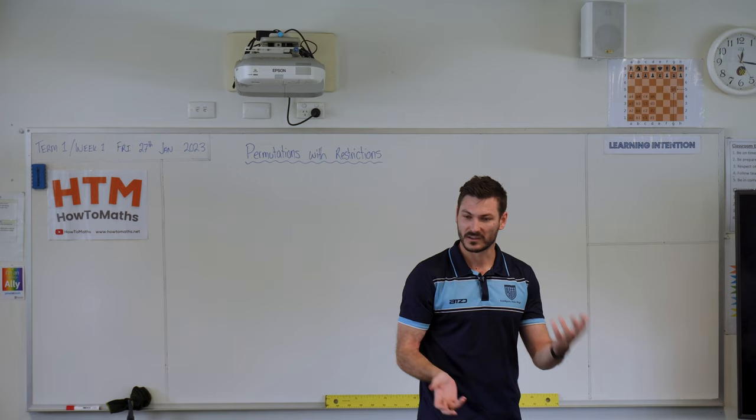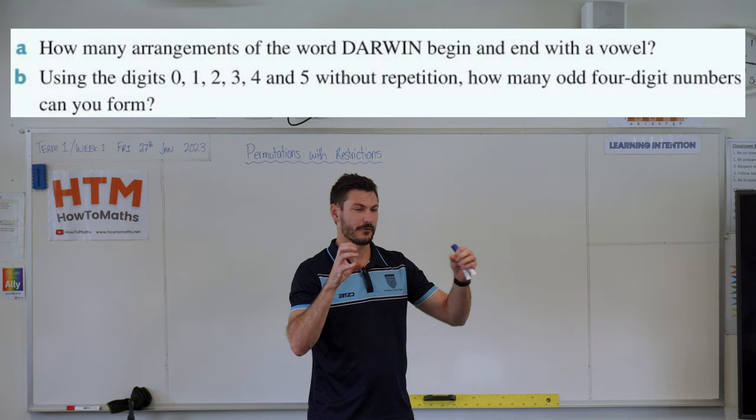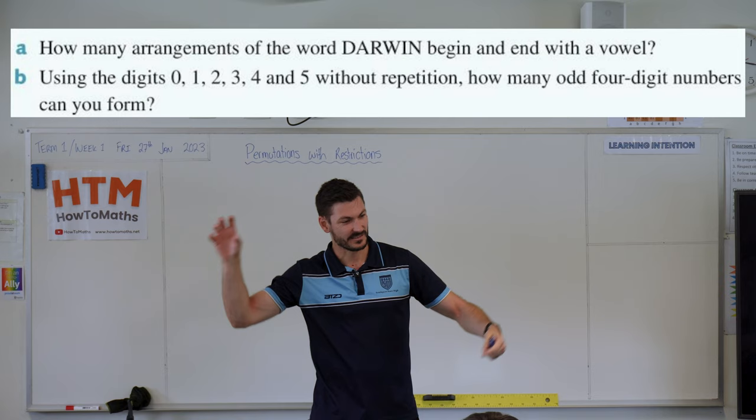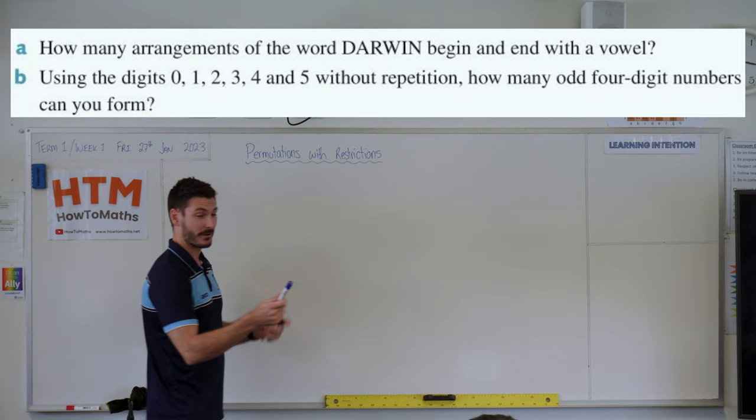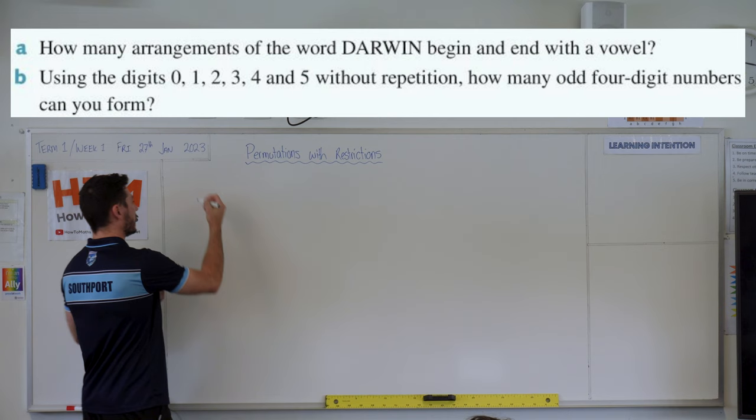So first of all, we've got the question: how many arrangements of the word DARWIN begin and end with a vowel? So if you've got this or you've got a situation where you're arranging students on a seat or something and someone has to sit at the front, someone has to sit at the end, anytime you've got that system going on, I recommend using that box method where we draw all the boxes with how many options we have. So in DARWIN we have D-A-R-W-I-N, that's six spots. So question one, draw our six boxes.